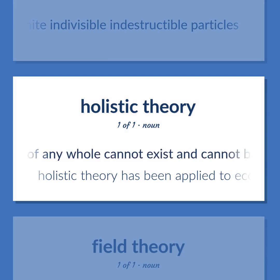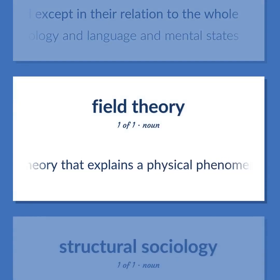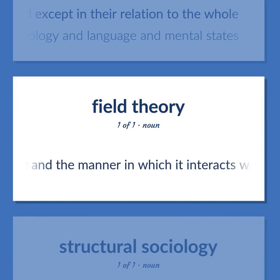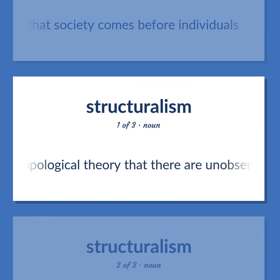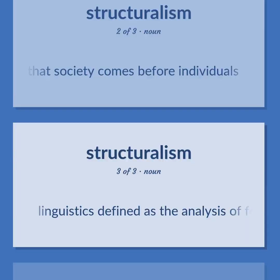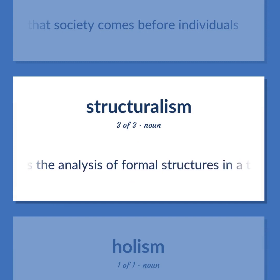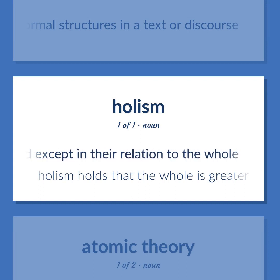The theory that the parts of any whole cannot exist and cannot be understood except in their relation to the whole. Holistic theory has been applied to ecology and language and mental states. Physics: a theory that explains a physical phenomenon in terms of a field and the manner in which it interacts with matter or with other fields. A sociological theory based on the premise that society comes before individuals. An anthropological theory that there are unobservable social structures that generate observable social phenomena. Holism holds that the whole is greater than the sum of its parts.